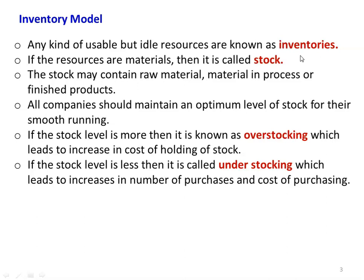All companies should maintain an optimum level of stock for smooth running. The optimum level is the key question — we have to identify it based on our mathematical model. When the optimal level is not maintained: if the stock level is more than the optimal level, it is called overstocking, which leads to increased holding cost. If the stock level is less, it is called understocking, which leads to increased purchasing frequency and cost.